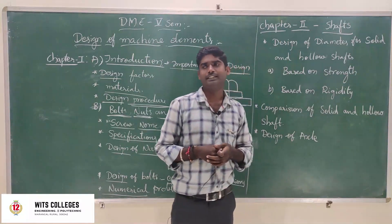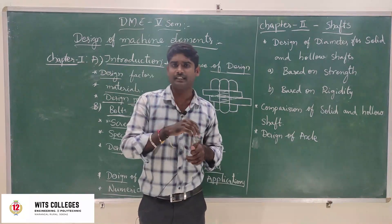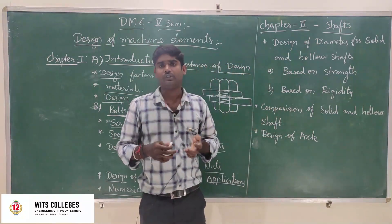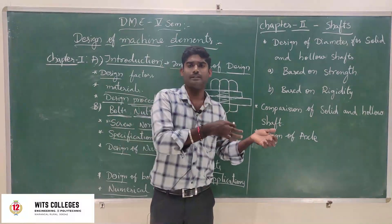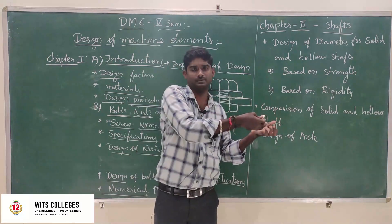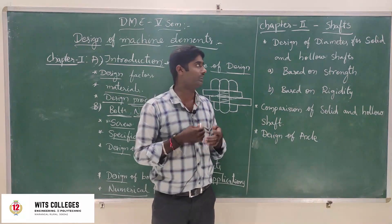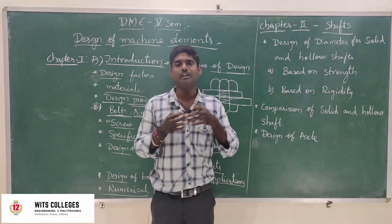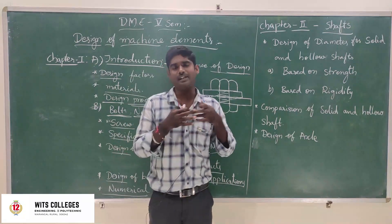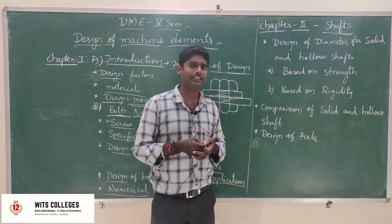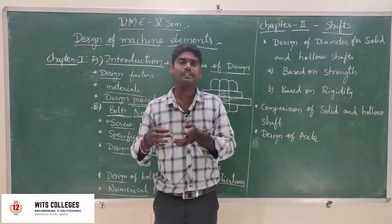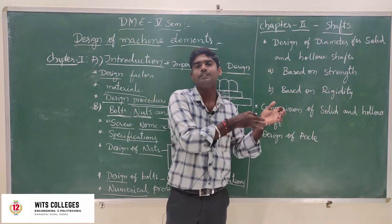Chapter 2 is the most important chapter in Design of Machine Elements. If you transmit power from one element to another element — for example, motor to another machine — we use a shaft. To transmit power from one element to another, or energy from one machine to another, we use a shaft. One example is the propeller shaft. In vehicles, the propeller shaft transmits power from the gearbox to the differential.